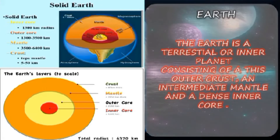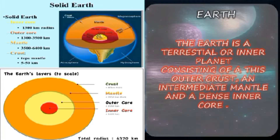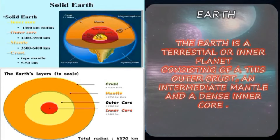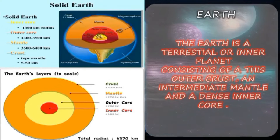The crust is the outer layer of the Earth. The mantle is described in orange color. The outer core is yellow, and the inner core is red. The Earth's crust is what we walk on every day. Just below the crust lies the mantle. The outer core lies beneath the mantle. The inner core is the deepest layer on the Earth. That's all about the Earth's layers.